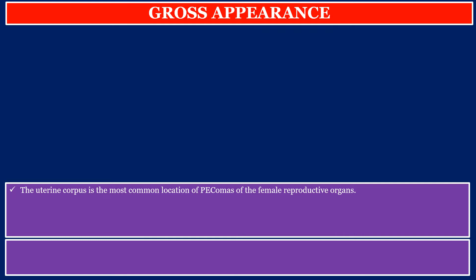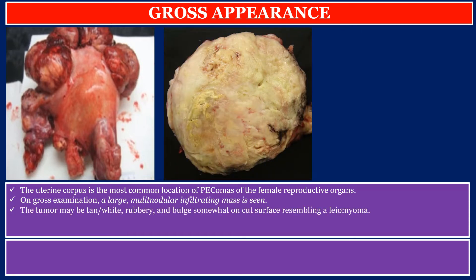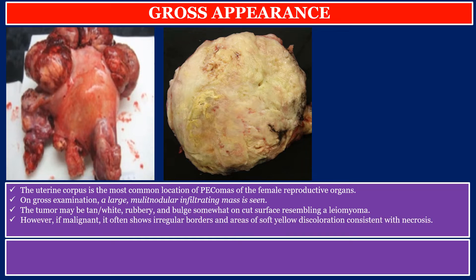The uterine corpus is the most common location of PEComas of the female reproductive organs. On gross examination, a large multinodular infiltrating mass is seen. The tumor may be tan-white, rubbery, and bulge somewhat on cut surface resembling a leiomyoma. However, if malignant, it often shows irregular borders and areas of soft yellow discoloration consistent with necrosis.